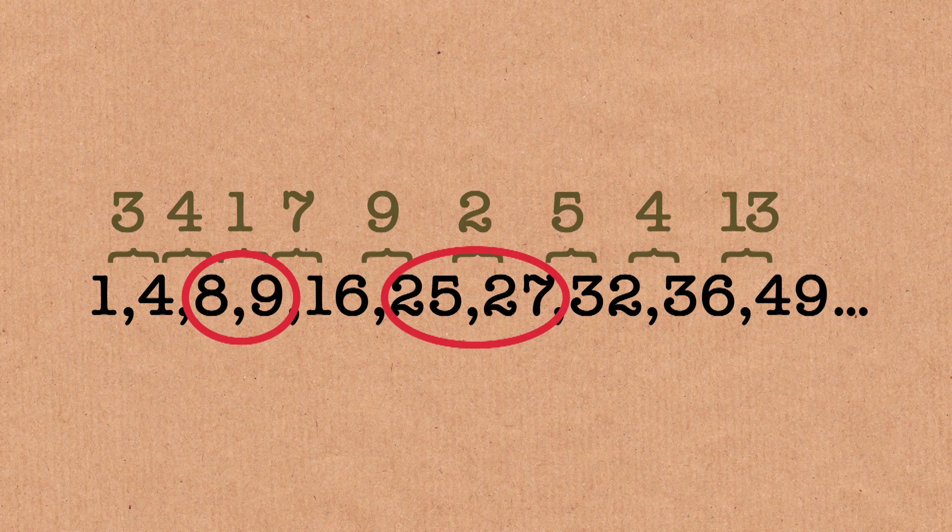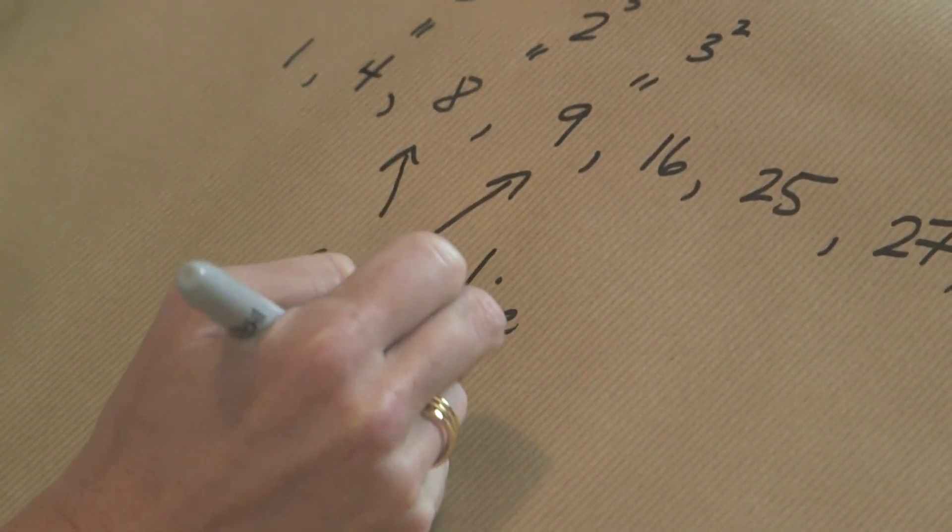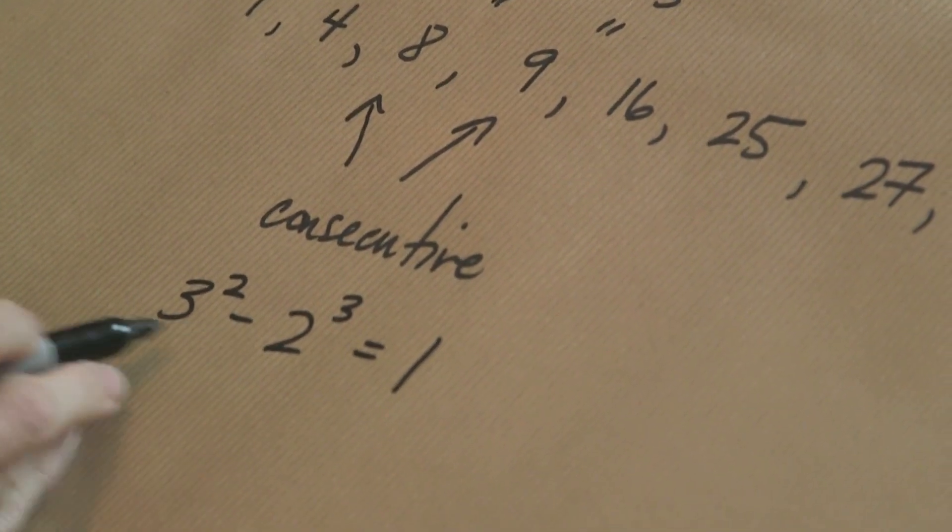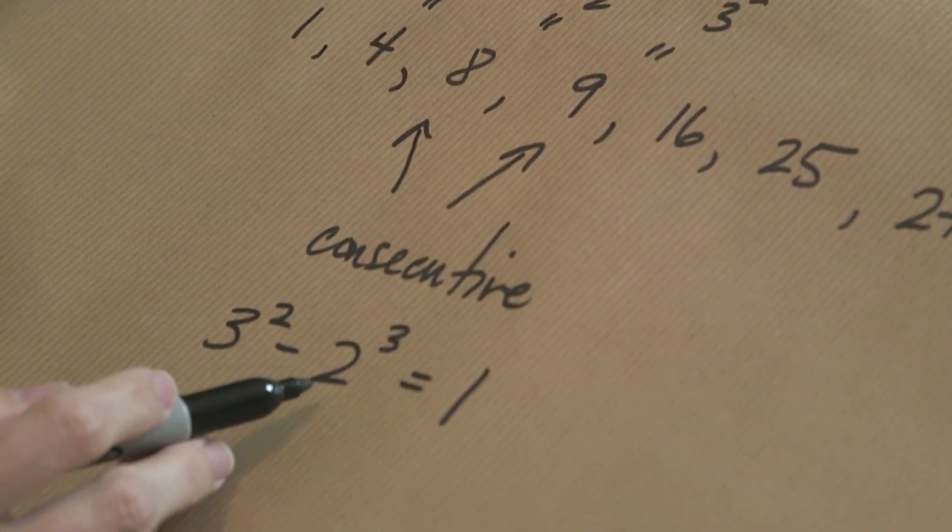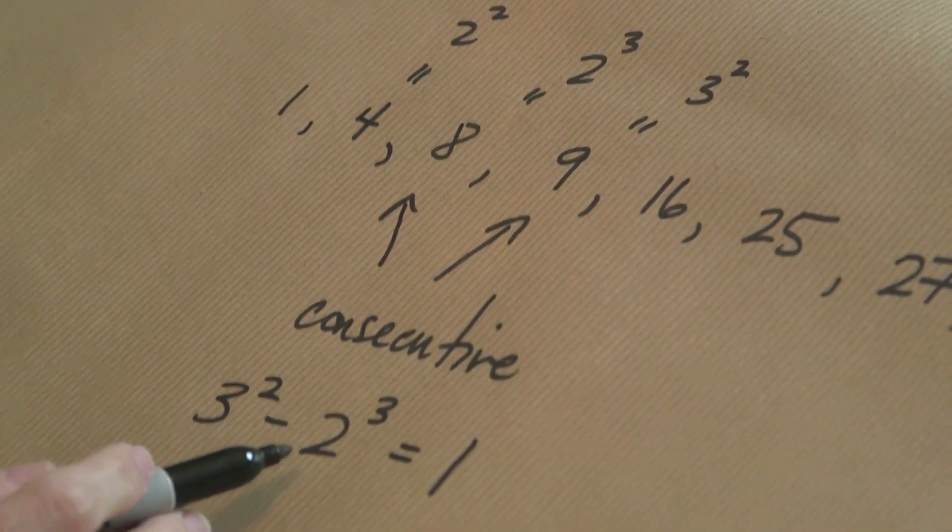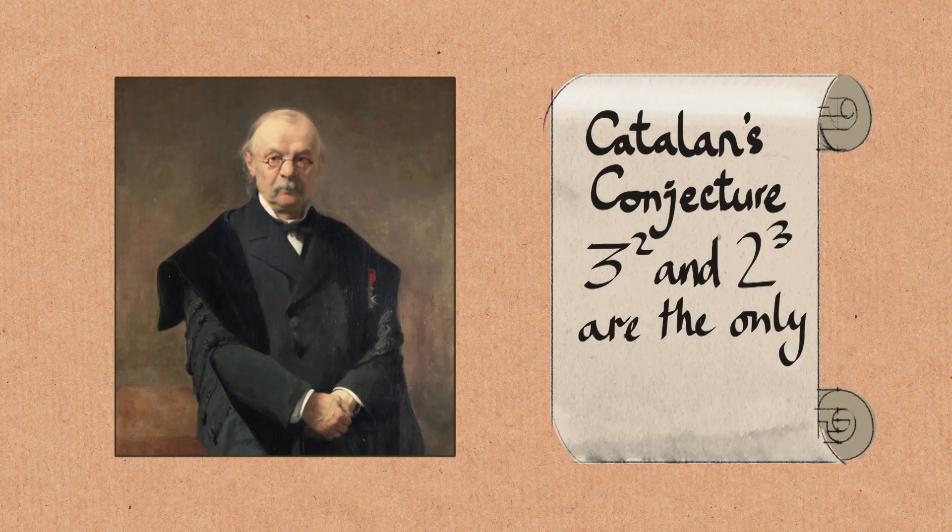But what Catalan conjectured, and this is a question people have been interested in for hundreds of years actually, is this particular pair of eight and nine. So the fact that three squared minus two cubed is equal to one, or really that you have any two powers which differ by one. No other example of that was known. And so what Catalan conjectured is that this is the only time that this happens, that you have two powers whose difference is exactly one.